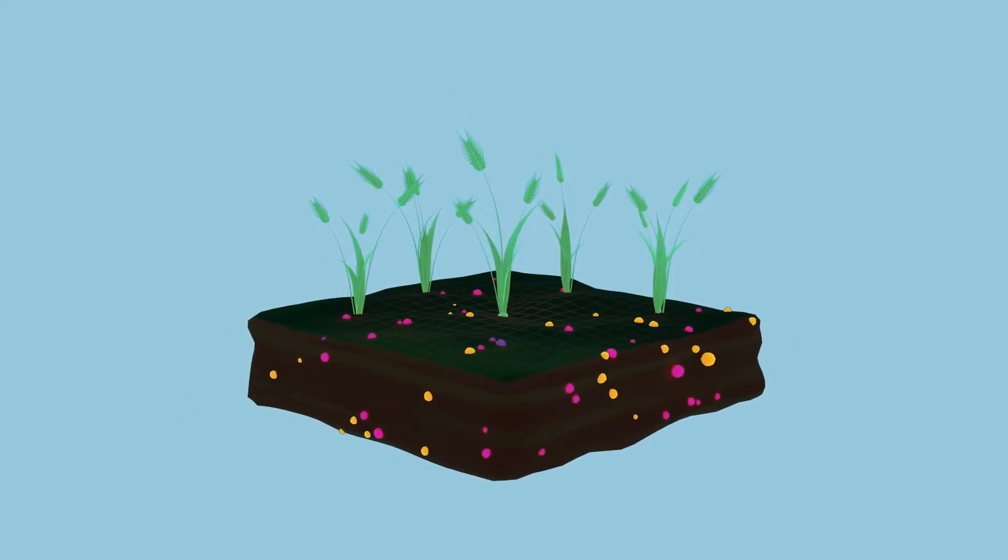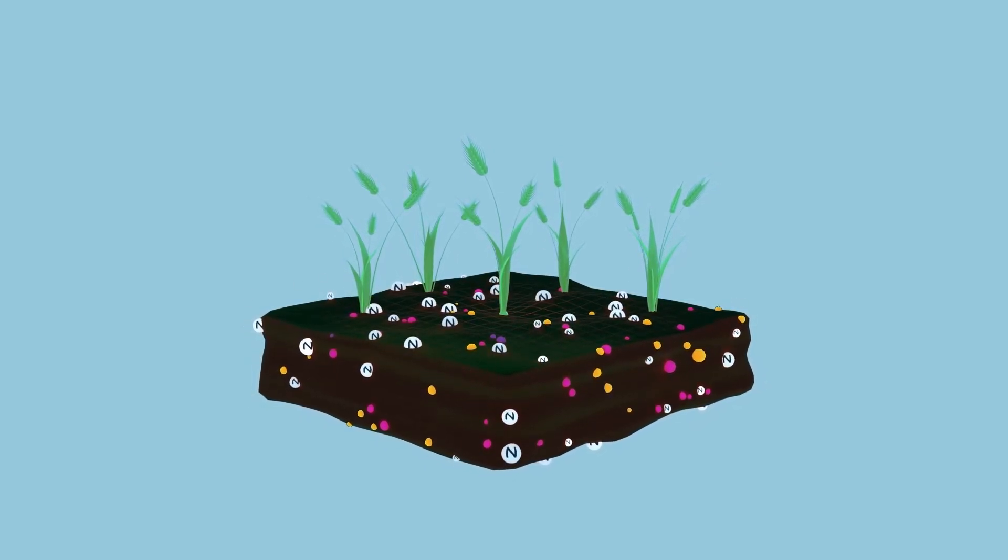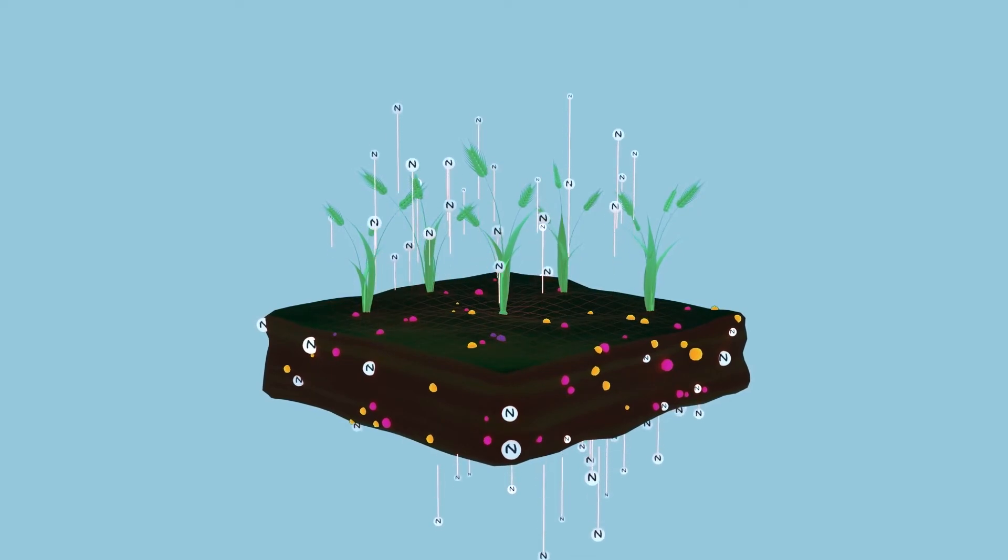When farmers use traditional sources of nitrogen, only a fraction is used by the plants, and the rest is lost in the air and the groundwater.